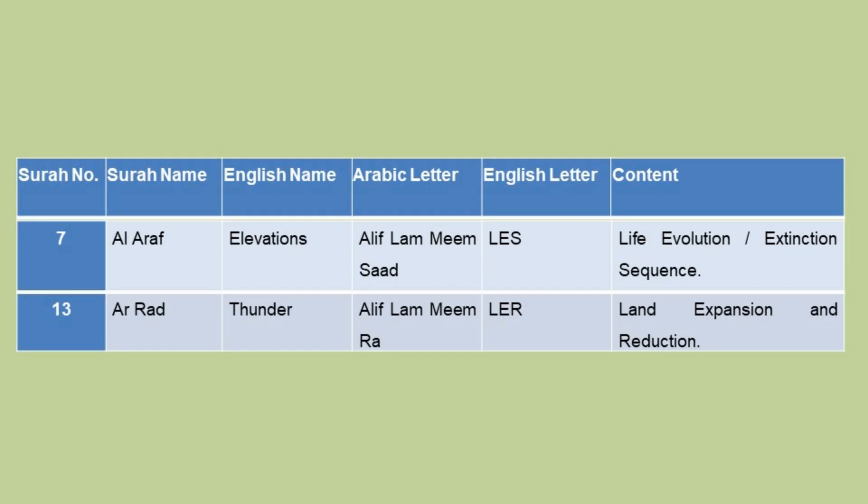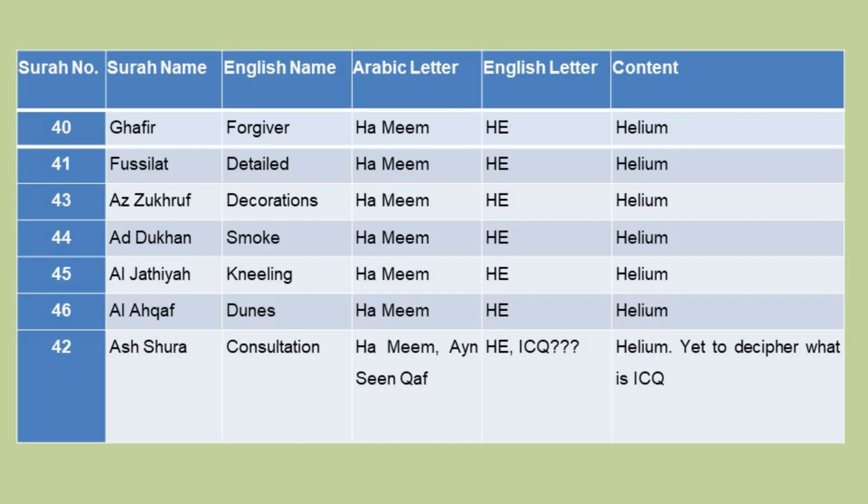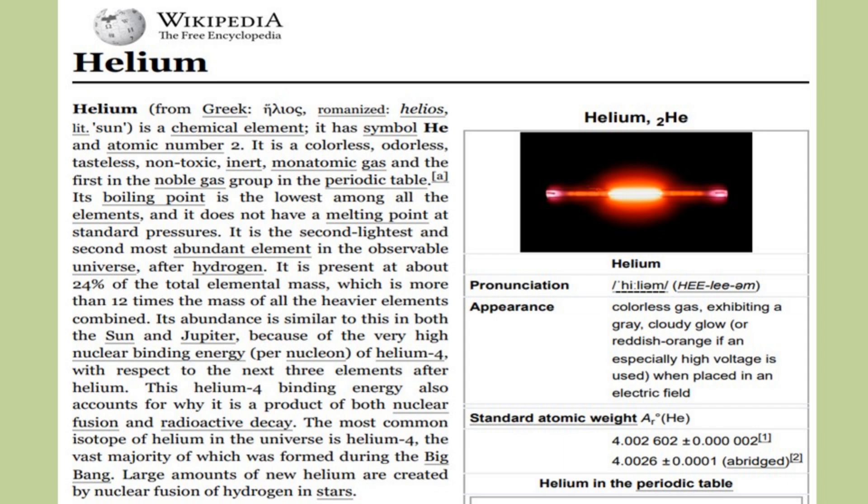Chapter 7 — Alif Lam Mim Ra — LER — Land Expansion and Reduction. Chapters 40, 41, 43, 44, 45, and 46 — Ha Mim — HE — related to Helium.